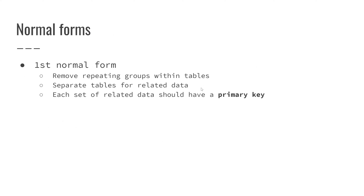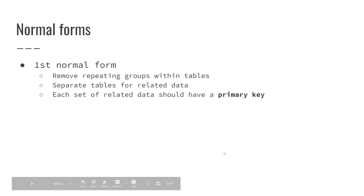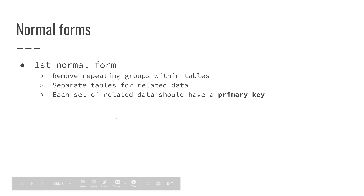Let's look at what these normal forms are, and then we'll get into it with a mock-up table. The first normal form is this idea of repeating groups within tables. If you have columns that are repeating but contain the same information, essentially what you should do is break these out into a separate table versus having them all contained within one. Also, each set of related data should have a primary key — this is your way to connect these data points to one another, which is obviously important for a relational database.